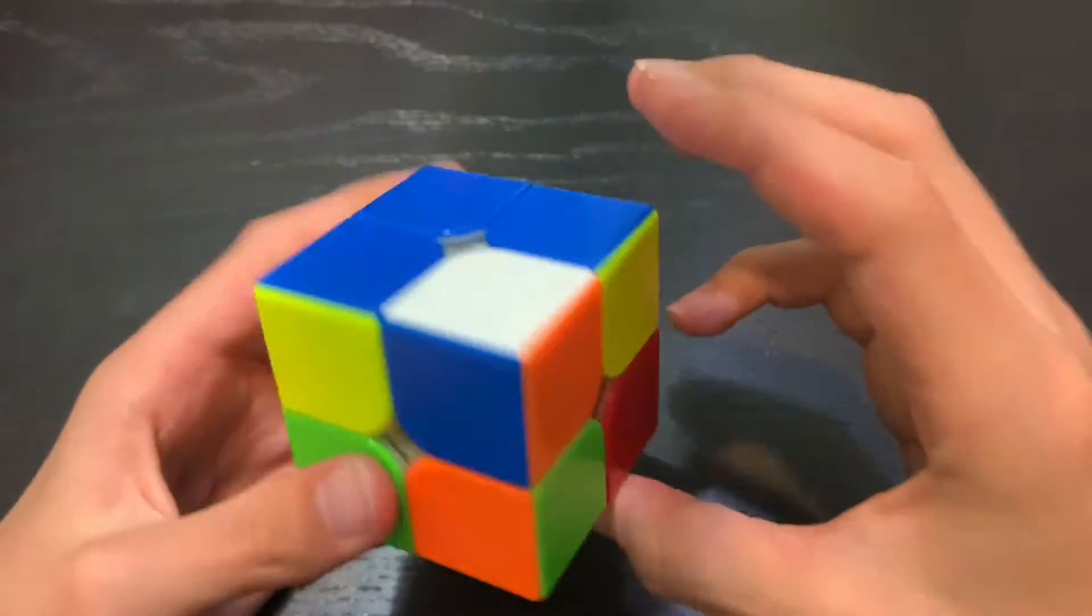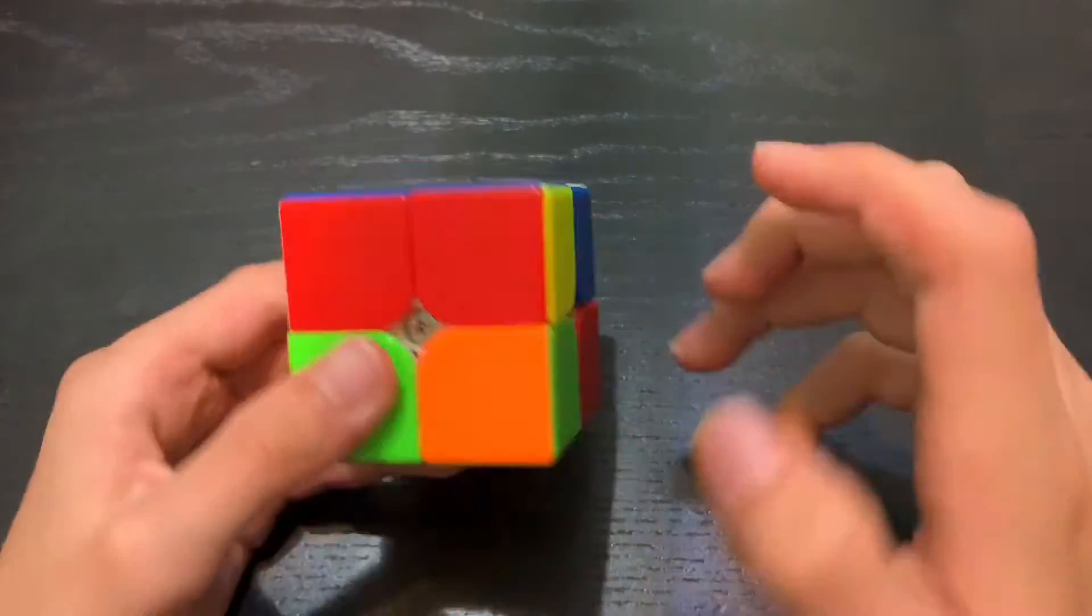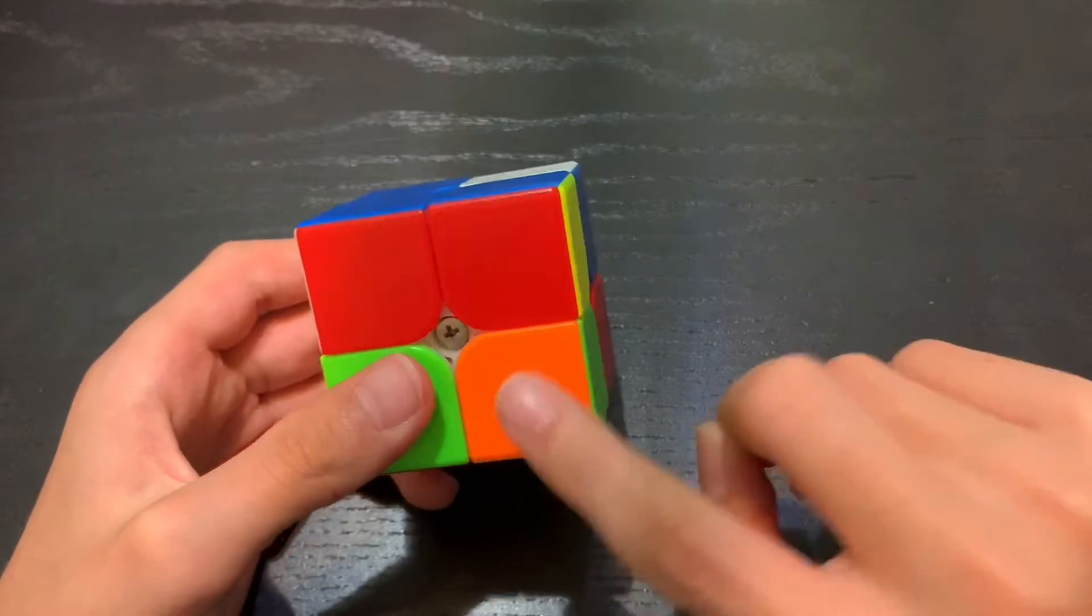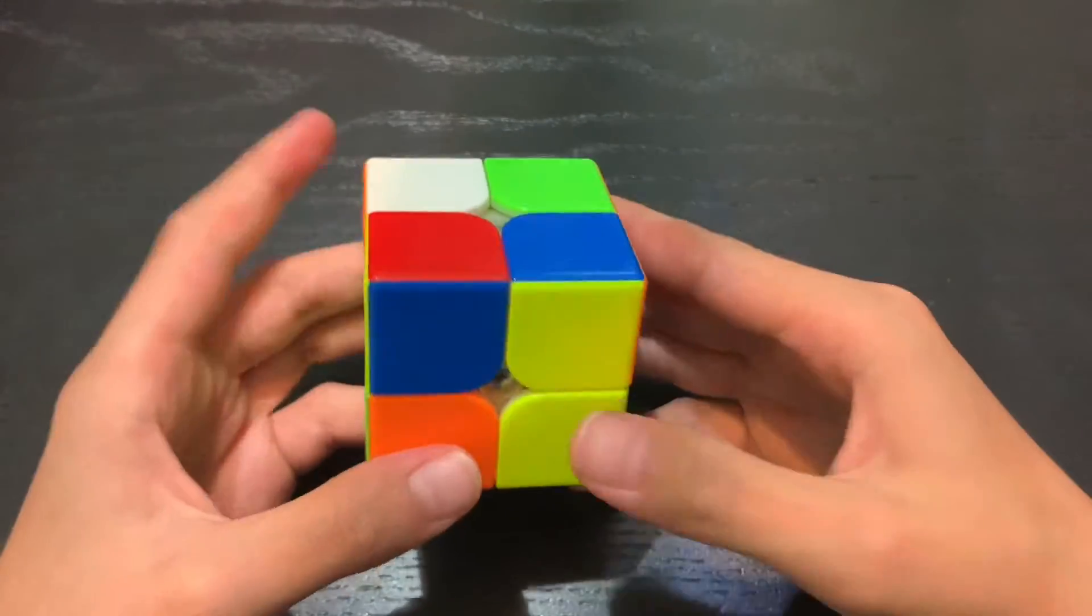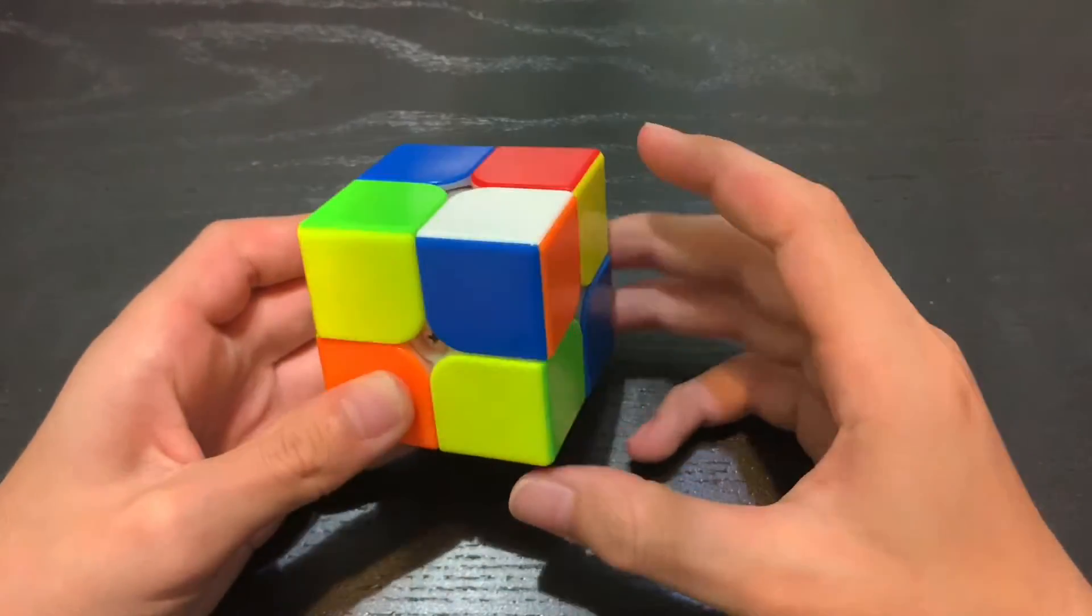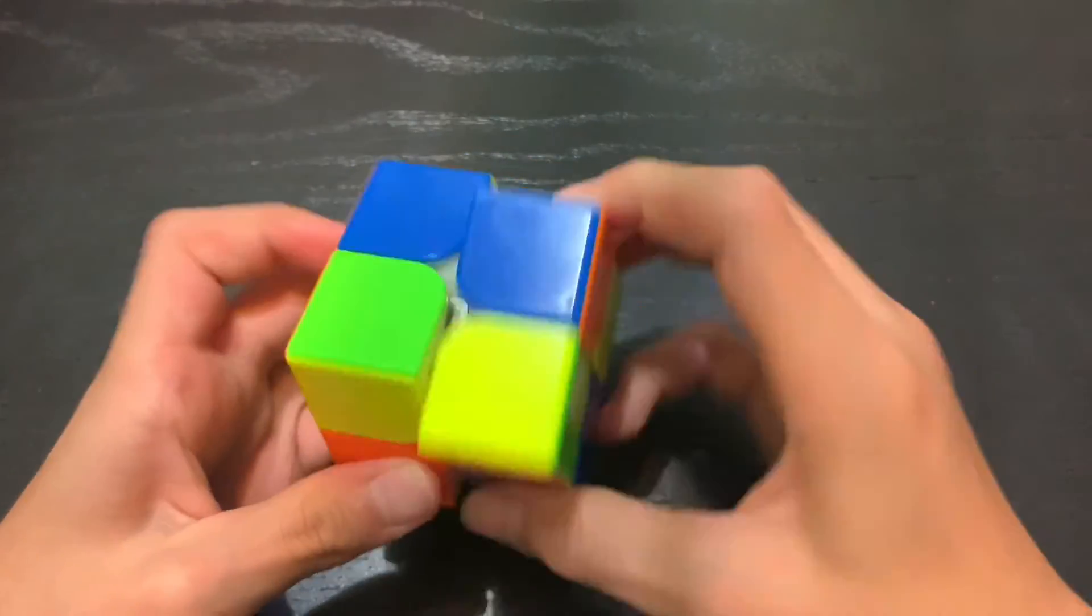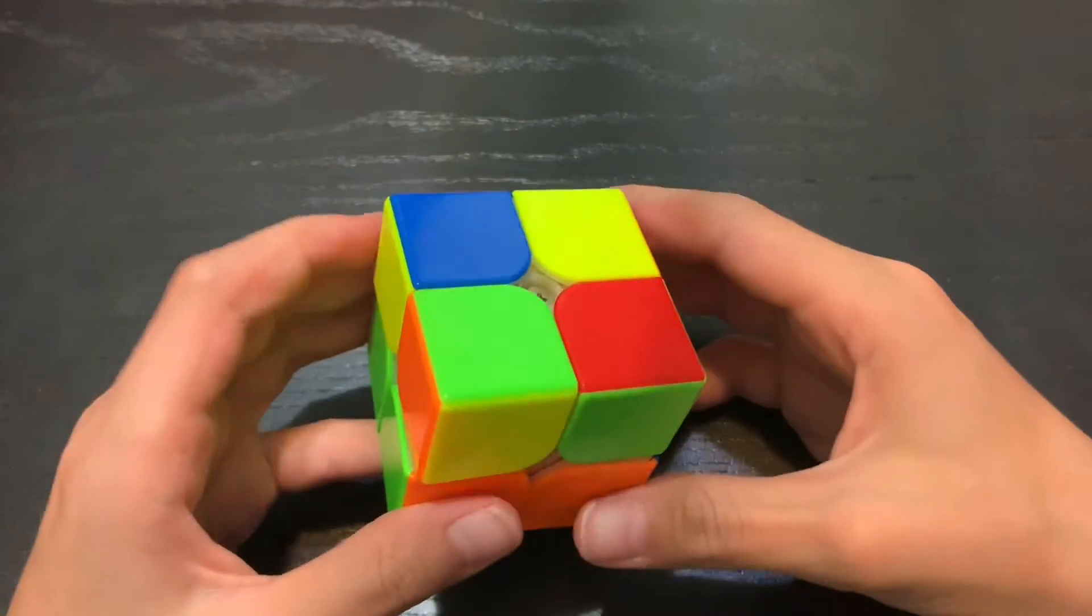And now next piece, I have the white, blue, and red. Red is here, so that means blue should be here. So insert this. And now I have this last piece. To insert this one, you just hold it here and do R, U, R prime, U prime, U prime, three times until it faces the correct direction.